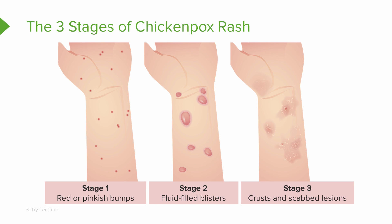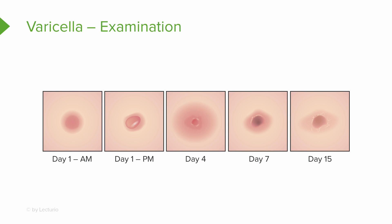Here we see the classic phases. You have red or pinkish bumps in the first phase, then these turn into vesicles and become fluid-filled, and finally they crust and scab over. Here's another sequence, which varies based on the patient and the severity of their chicken pox.